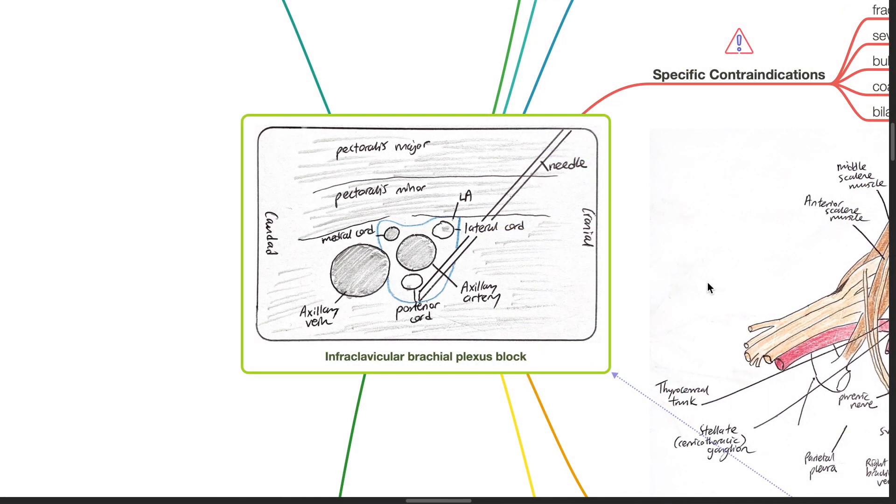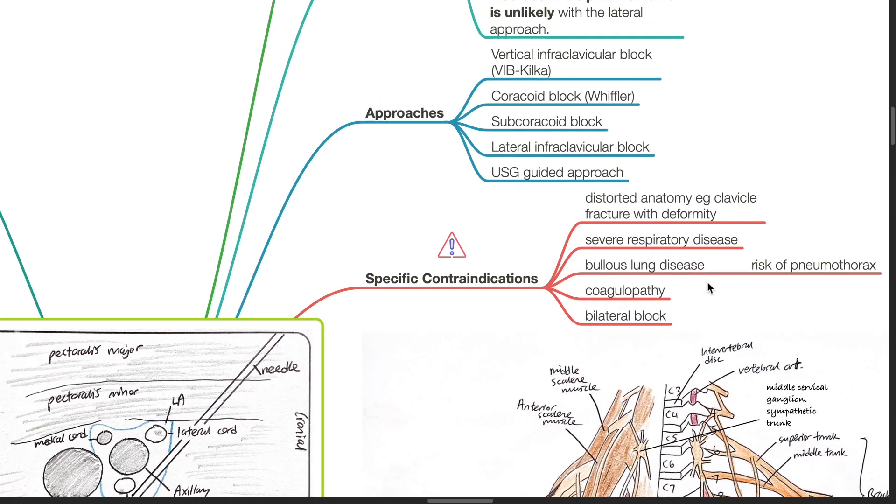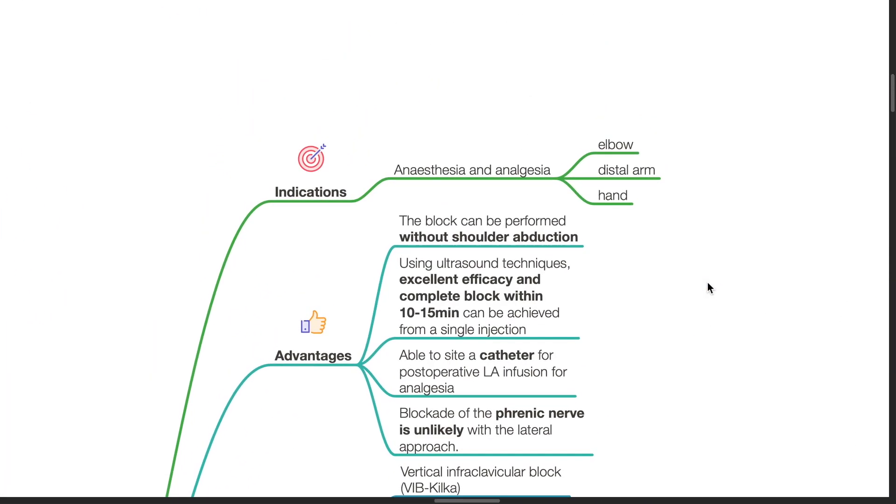Infraclavicular brachial plexus block. Indications include anesthesia and analgesia for the elbow, distal arm, and the hand.